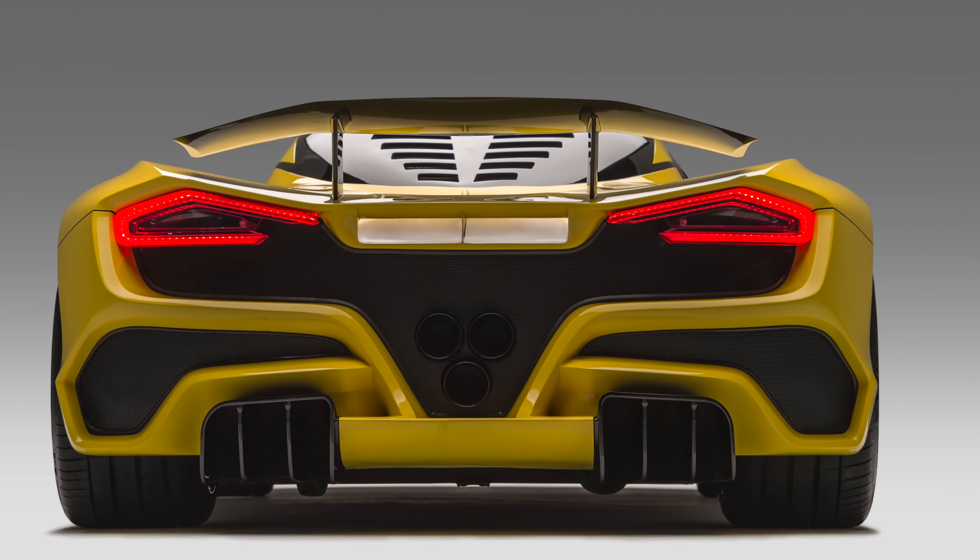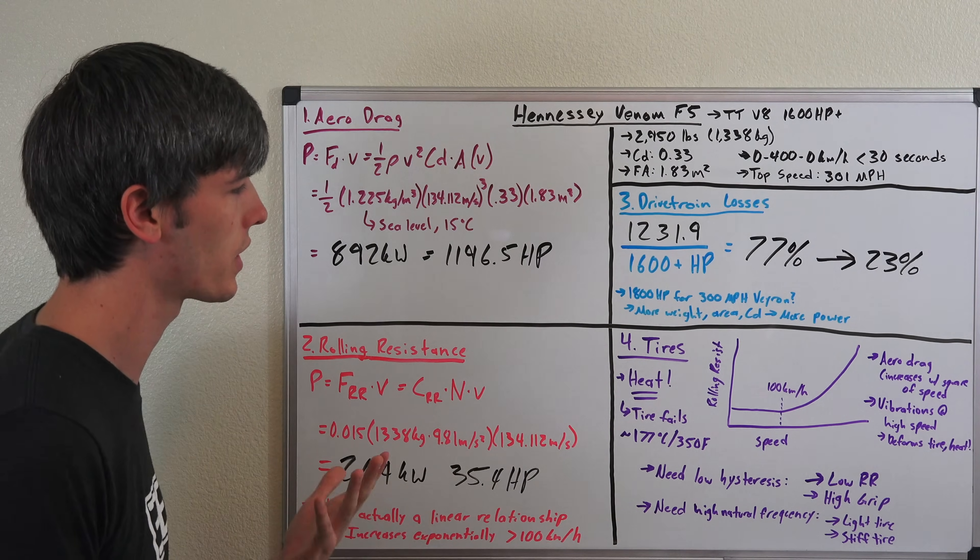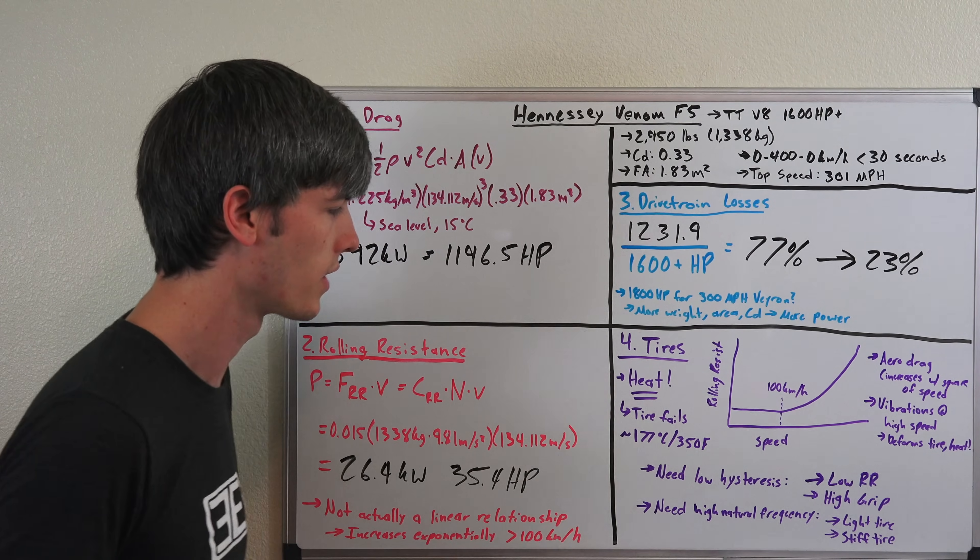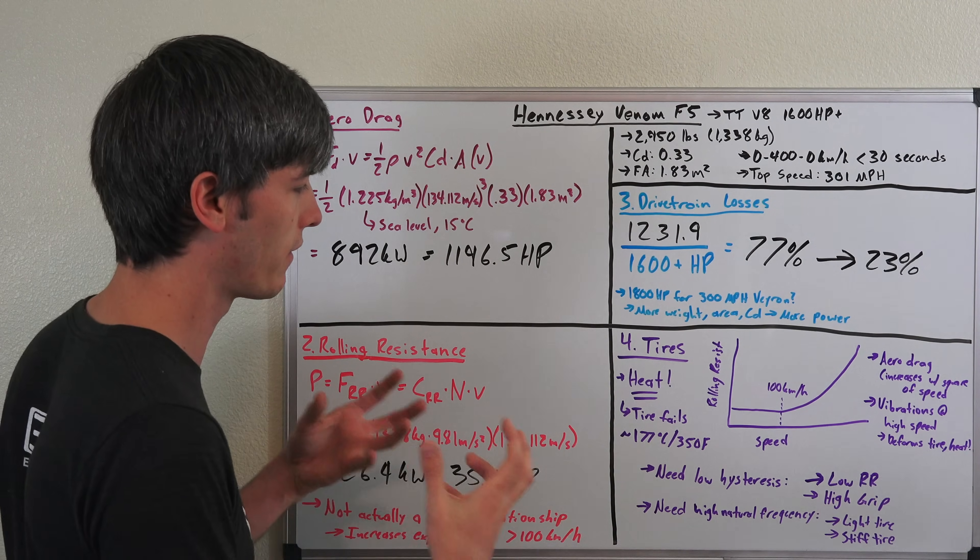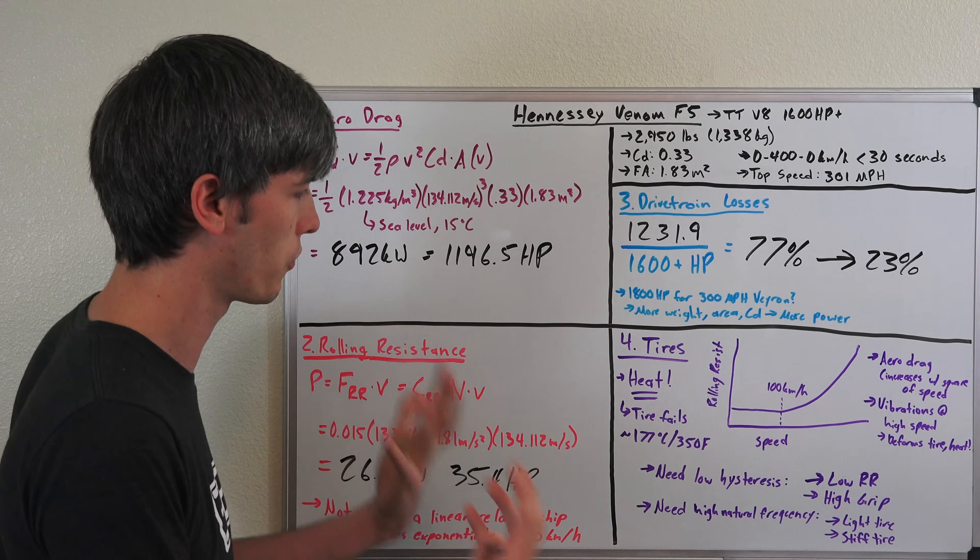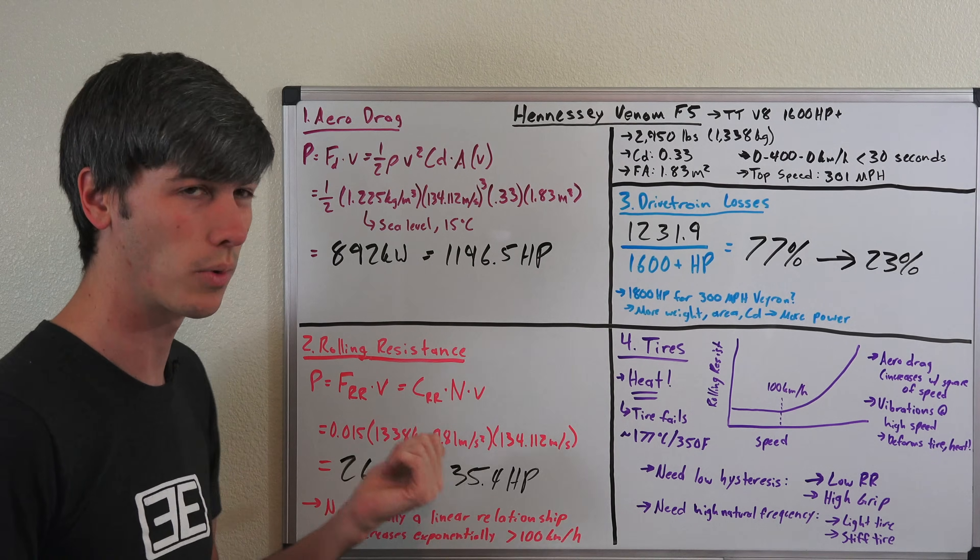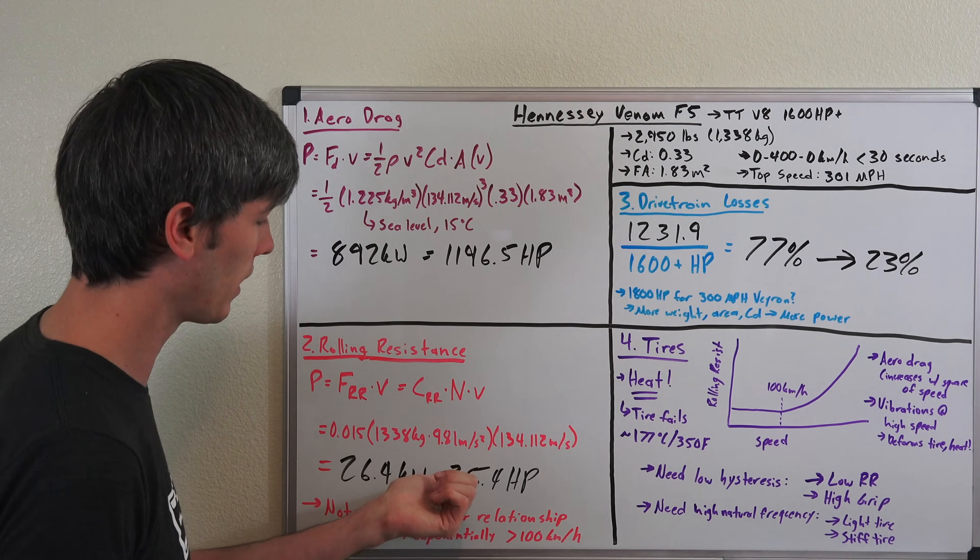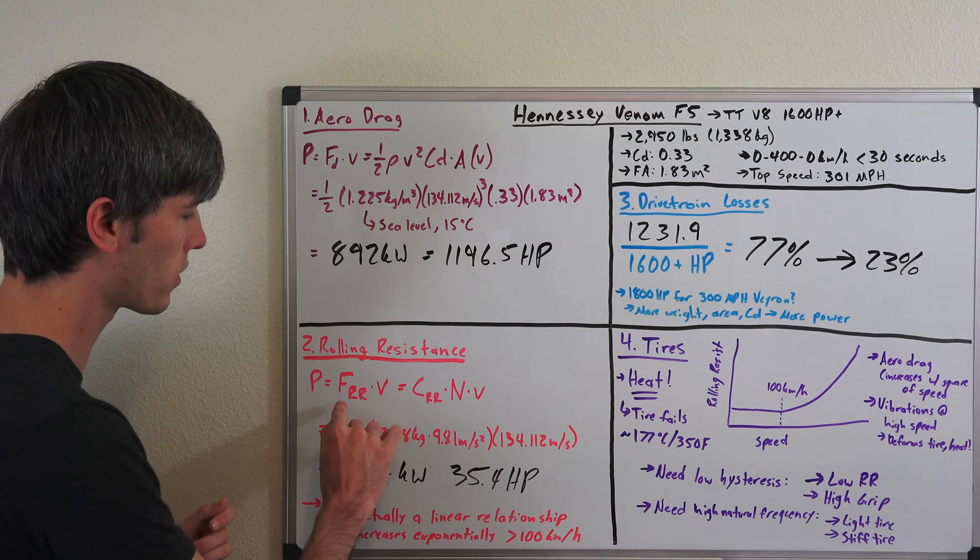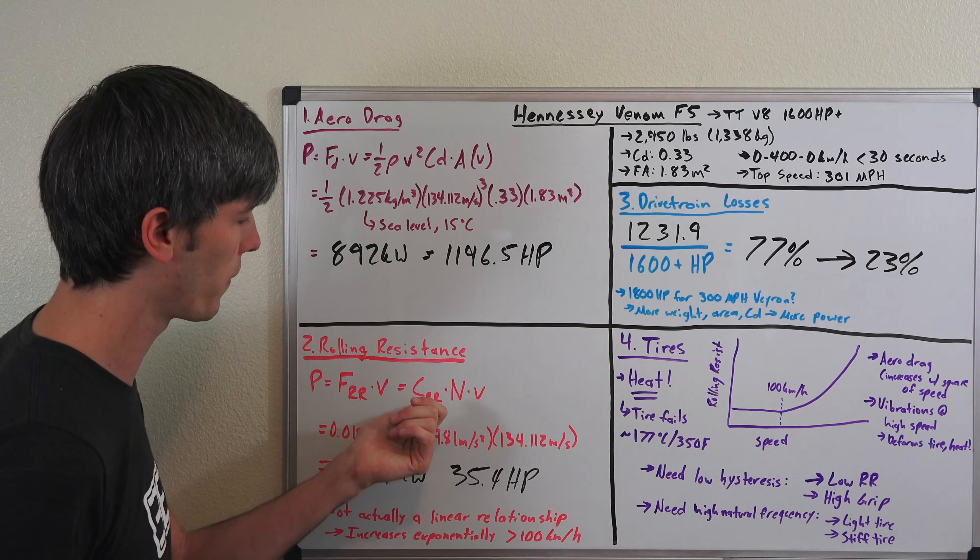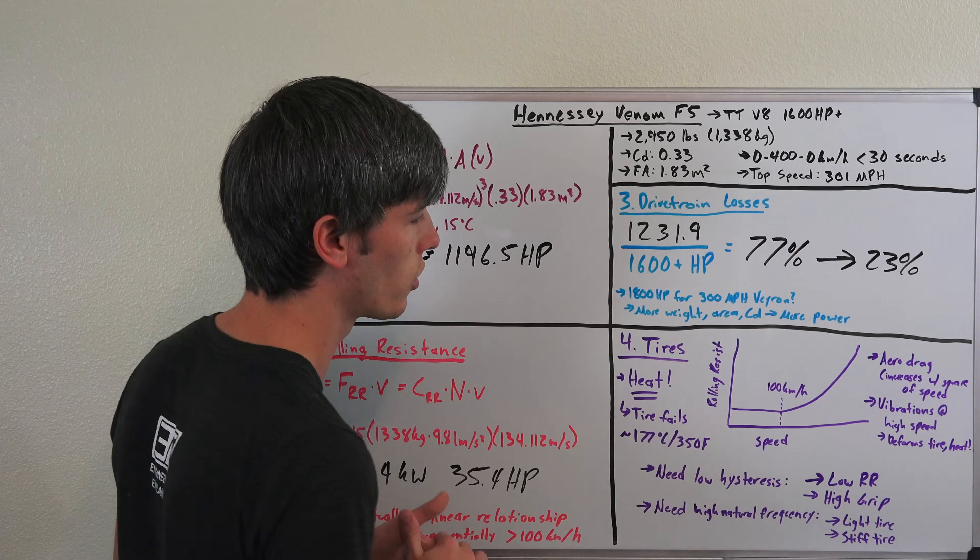But the tires, on the other hand, will be a challenge. The reason being is because tires get very hot, especially at these really high speeds. If the tires exceed their vulcanization temperature—about 177 degrees Celsius or about 350 degrees Fahrenheit—they start to degrade and fail. This is what you don't want to happen. Now 35.4 horsepower is what's going into that tire, and that is a lot by itself. But actually what happens is as you get above 100 kilometers per hour, this equation isn't entirely accurate. Your coefficient of rolling resistance is going to start increasing, and it'll increase exponentially as you get into those higher speeds.